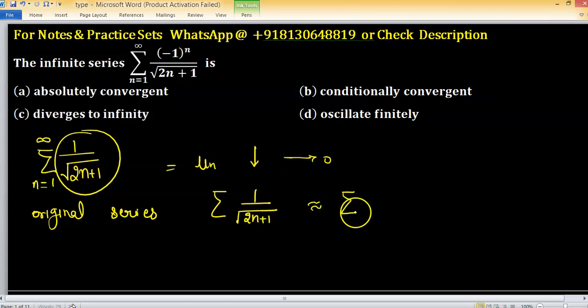this series is equivalent to 1 upon under root n, and 1 upon under root n is divergent. Why divergent? Because 1 upon under root n you can write as 1 upon n raised to the power half.